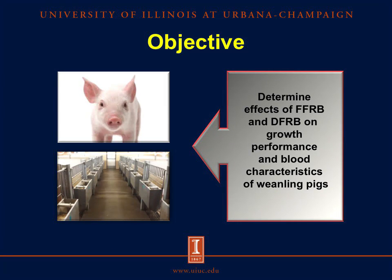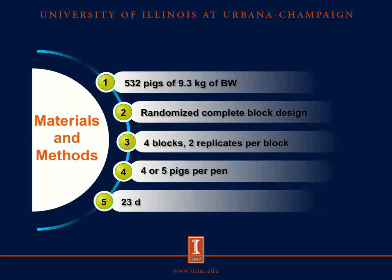For that reason, we conducted one experiment to determine the effects of full fat rice bran and defatted rice bran on growth performance and blood characteristics of weaning pigs. In this experiment, we used 532 pigs that had 9.3 kilograms of body weight on average. These pigs were allocated in 14 treatments in a randomized complete block design with 4 blocks, 2 replicates per block, and 4 or 5 pigs per pen.